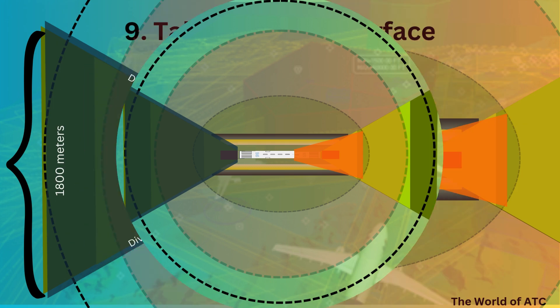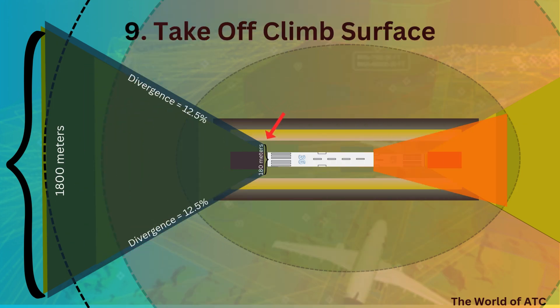Zooming in for further details, the inner width of take-off climb surface would be 180 meters and it would extend for 15,000 meters, till the end of obstacle limitation surfaces.